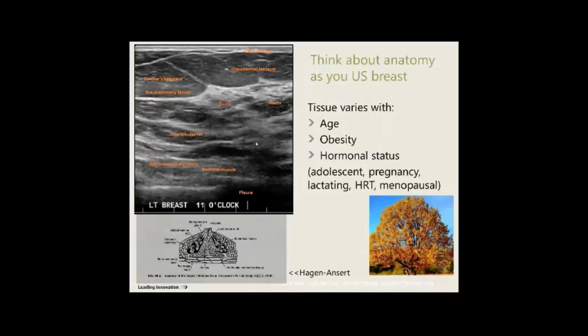Even with an average breast with an average amount of TDLUs, we have the dermal layer — epidermal and dermal — and the hypodermal fat layer. The breast is divided into three zones: the hypodermal zone, the parenchymal zone, and the retromammary zone. The breast parenchymal tissue is housed within the superficial fascia, which divides into the premammary fascia and the retromammary fascia. We're looking for breaks within these fascial layers and looking at the ducts as we scan through.